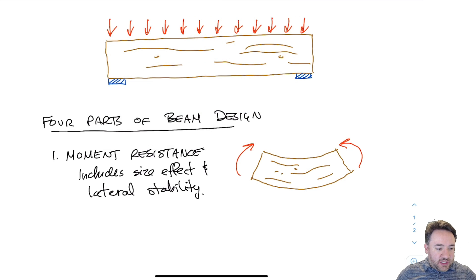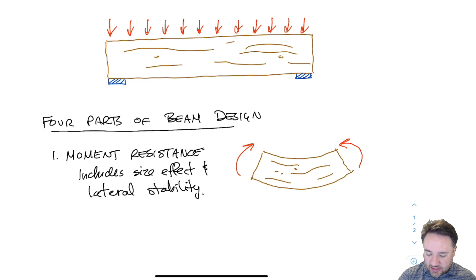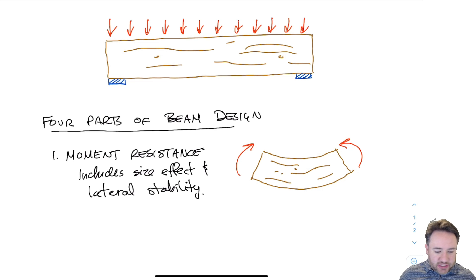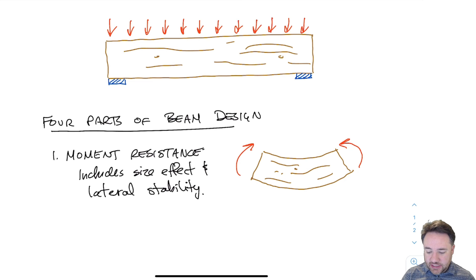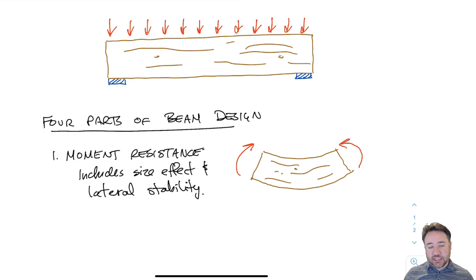The first one is the most obvious one for beams, which is the moment resistance. We have some moment which causes tension in the bottom and compression in the top. What I've shown on the right is a wood member with pure moment. Generally for beams we don't typically have pure moment, especially when we're designing in timber.